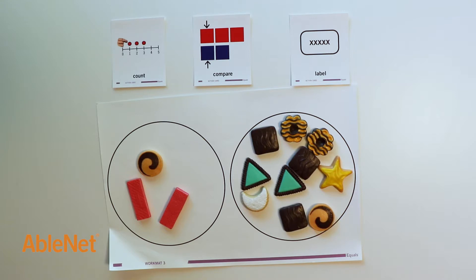The problem states Mrs. Ainsley is making cookies for her party. She put three cookies on one plate and ten cookies on another plate. Use a symbol to show which plate has less than the other.